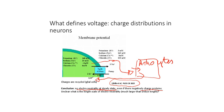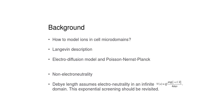It is actually unclear what is the length scale of electroneutrality. Can we say that we have local electroneutrality after hundreds of nanometers? This distance is much larger — much longer — than the classical Debye length that we are going to define next.